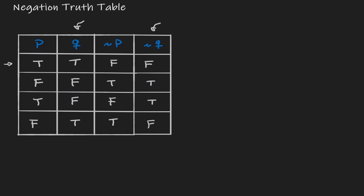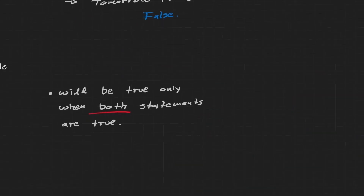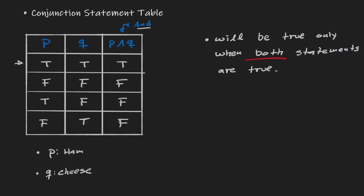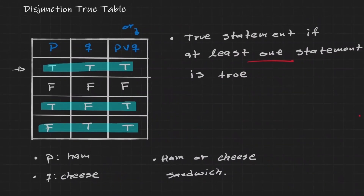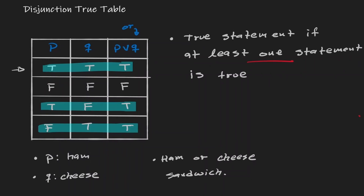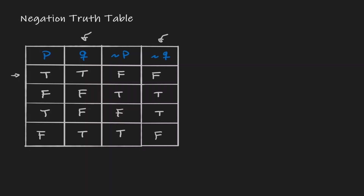Let's summarize what we've done today. We introduced the truth table for a conjunction statement — combining two statements with 'and' — and a conjunction is only true when both statements are true. For a disjunction, we join two statements with 'or,' and the disjunction is true if at least one statement is true. And for negation, it changes the meaning of the statement: if a statement is true, the negation is false, and vice versa.